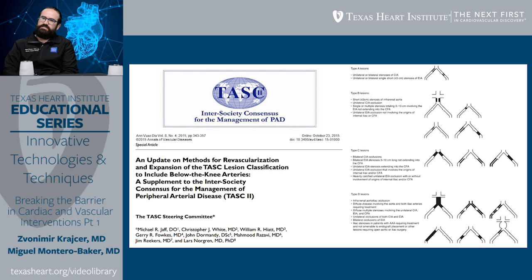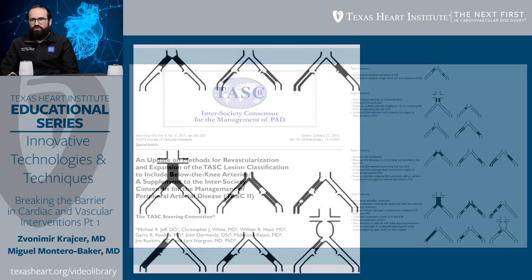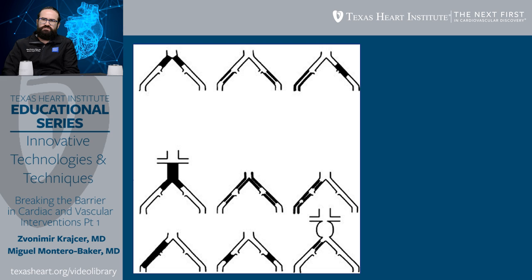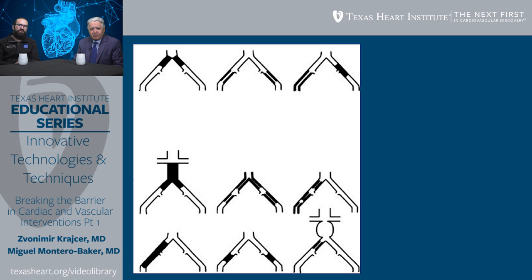The TASC group created anatomical degree of classifications. On the aortoiliac system specifically, they classified patients within four groups: A, B, C, and D — which was also done for femoral popliteal and below-the-knee disease. For aortoiliac disease, the C and D patterns raised discussion, as the consensus hints that all of these patients are better served with open vascular repairs.